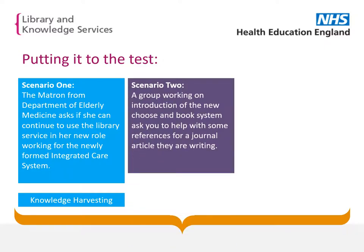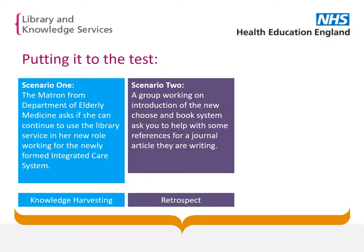In Scenario 2, you are asked to source some articles by a project team implementing a new IT system. When you send the articles, you may also send details about the technique of retrospect, so when they reach the end of their project, key lessons and learning can be captured and shared with others doing similar work in future. You may even offer to help facilitate this.